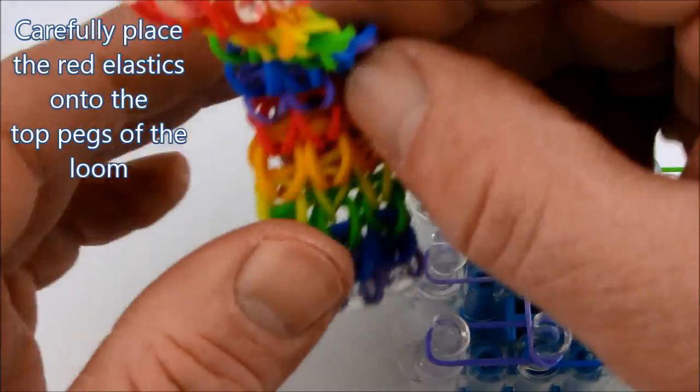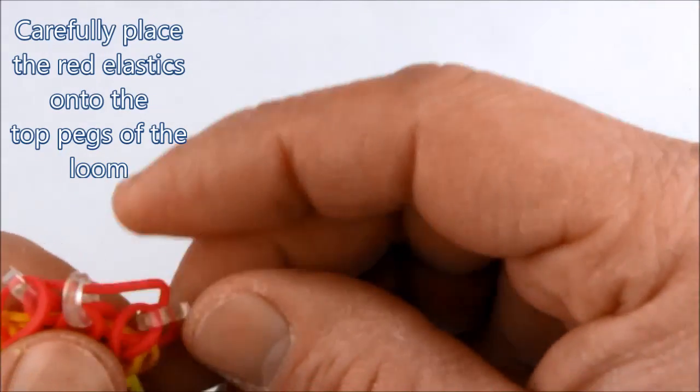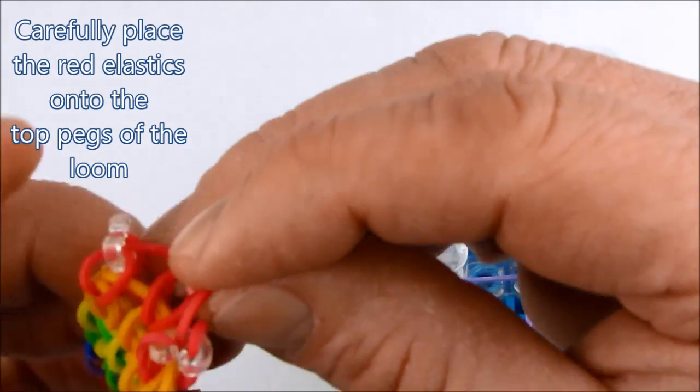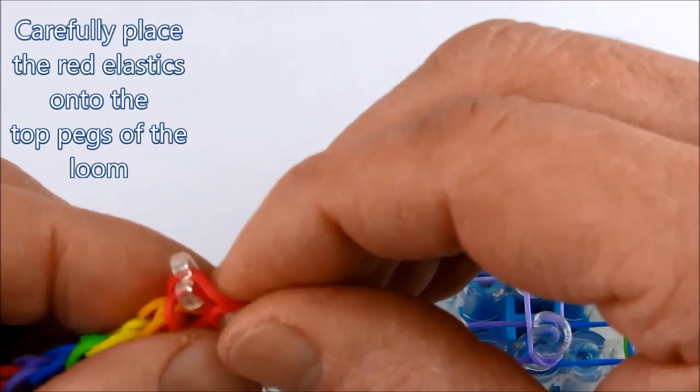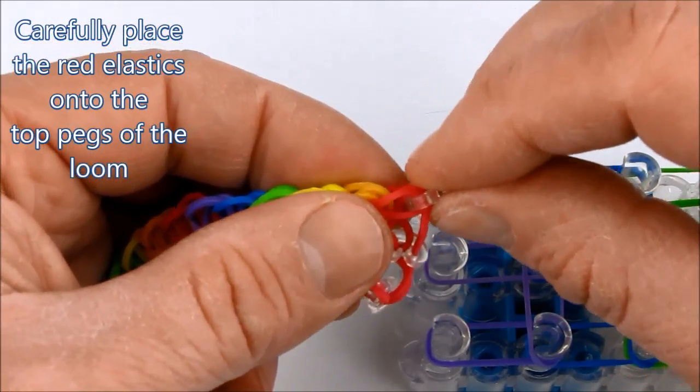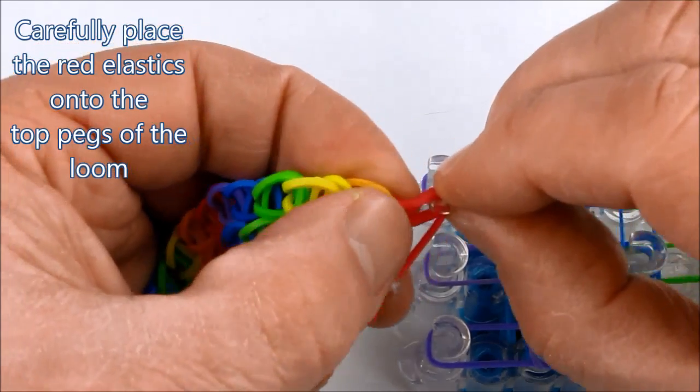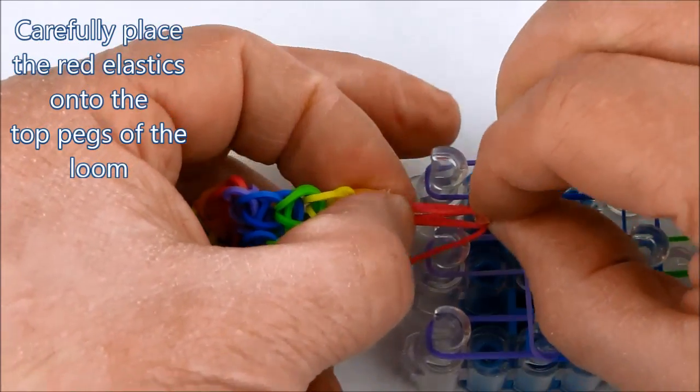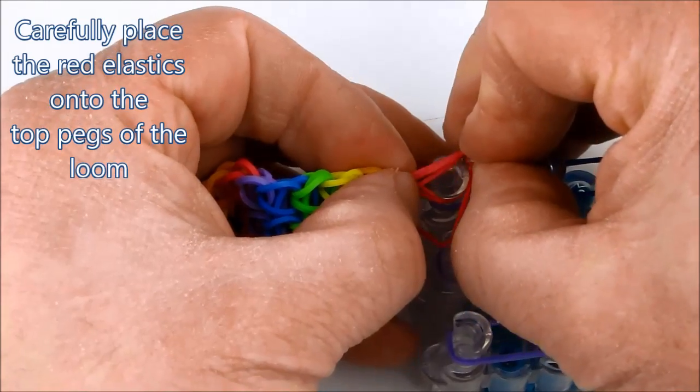Now we'll come with our pattern that we had made previously, and with the red elastics, we'll find the ones that go onto the left peg, stretch it across, and place it onto the peg.